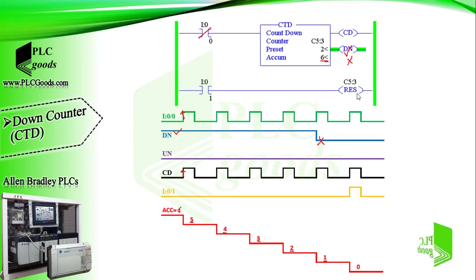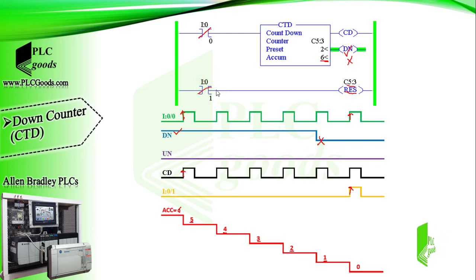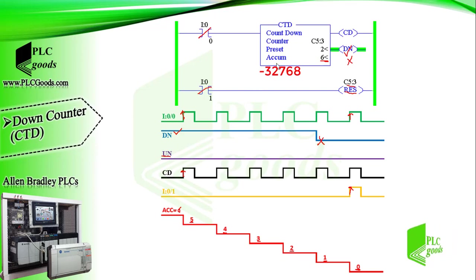With the reset instruction, we can reset the accumulated value to 0. Pay attention — at this time the down counter is activated to decrease its accumulated value. Also in the next line, the reset instruction resets the down counter to 0, so according to the last decision, PLC resets the accumulated value to 0. Another point is the underflow bit will be 1 any time the accumulated value exceeds the lower limit, which is minus 32768.